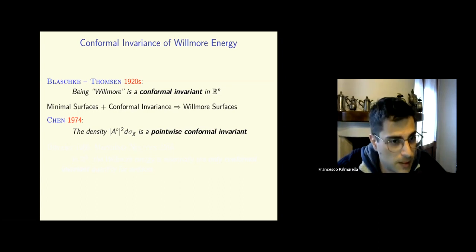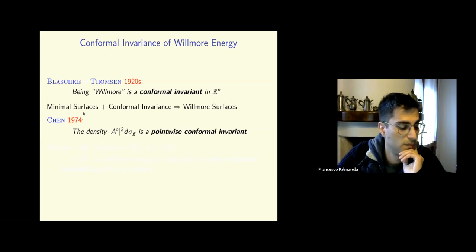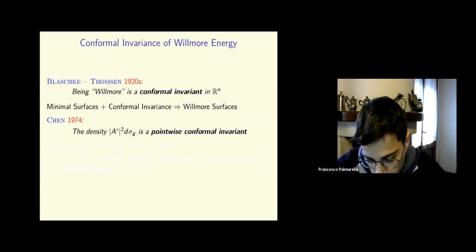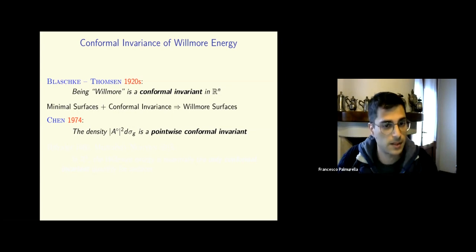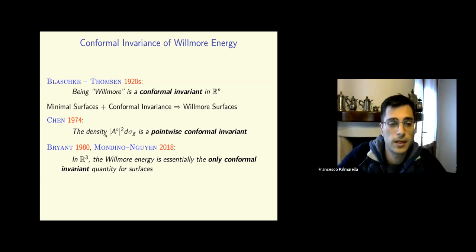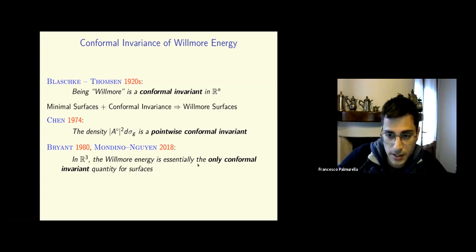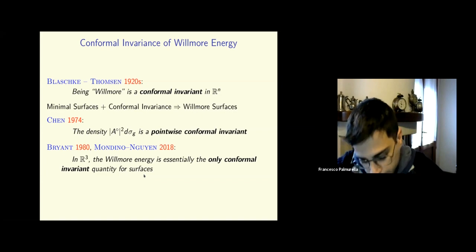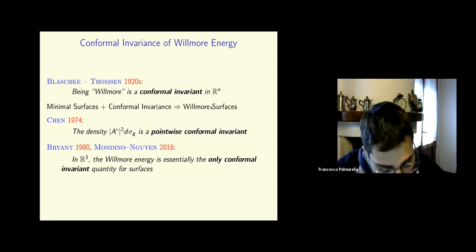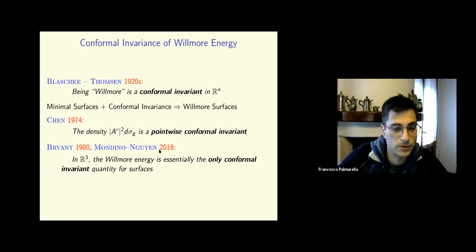This conformal invariance can be made more quantitative following a result of Chen from 1974, because the Willmore energy density in the trace-free version is a pointwise conformal invariant. In codimension one, in R³, one can also look at a paper by Bryant from the 1980s: the Willmore energy is essentially the only conformal invariant Lagrangian for surfaces. If a Lagrangian defined over all immersions of a given surface satisfies invariance with respect to the full conformal group of R³, then it's an affine combination of the Willmore functional.